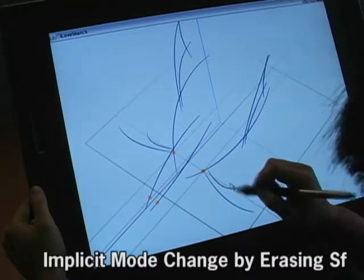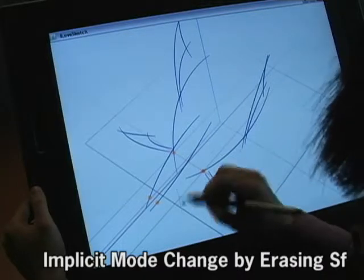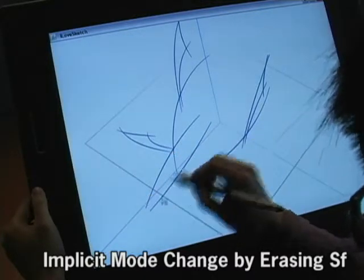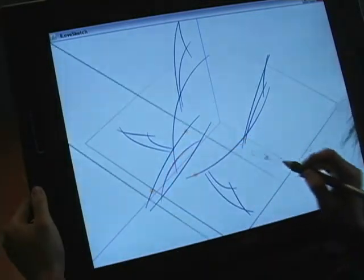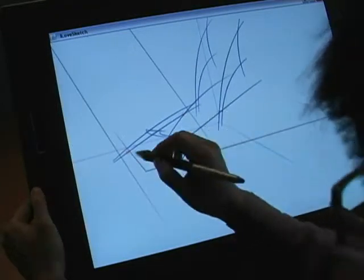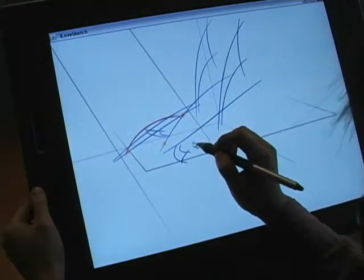Another type of implicit mode change is based on erasing the sketch surface. This is useful when the user wants to use two curve methods from the same view used for the current sketch surface method.